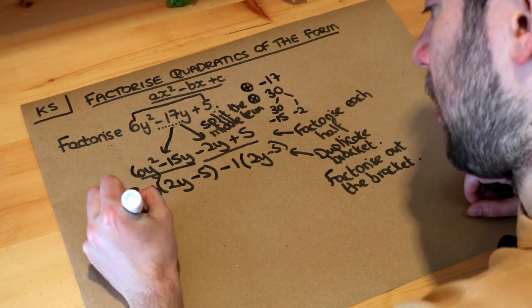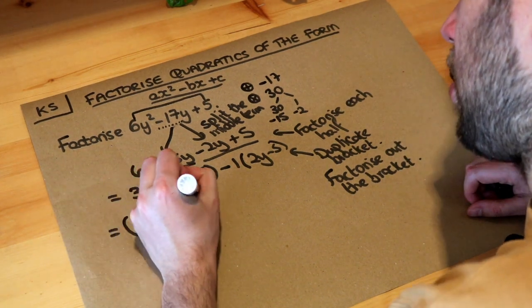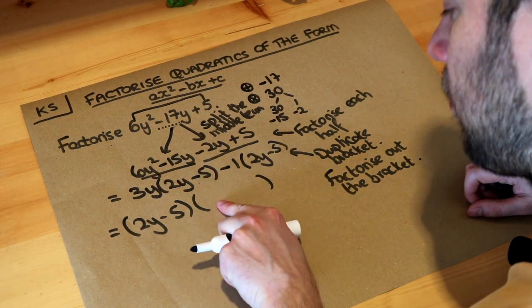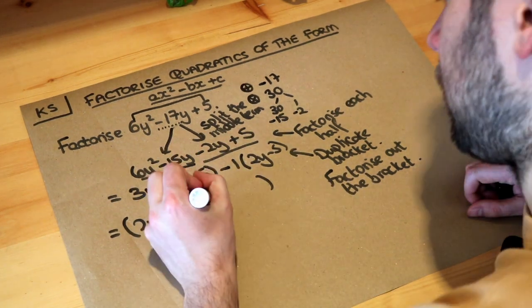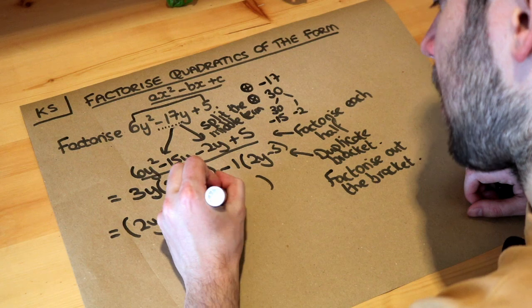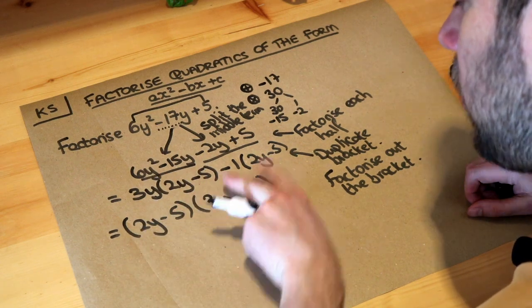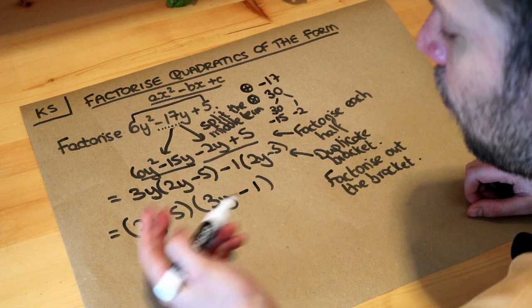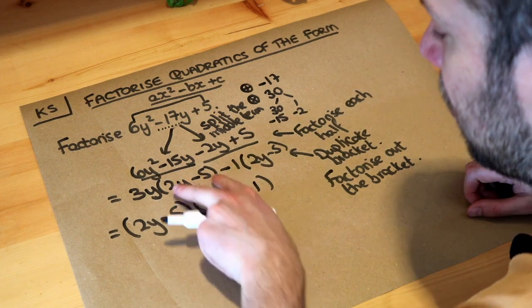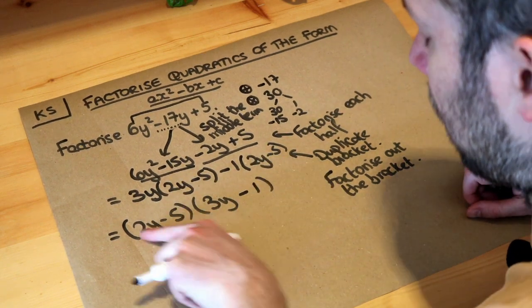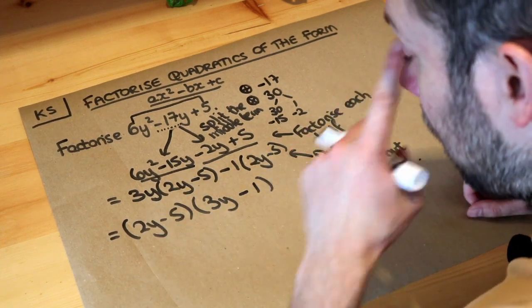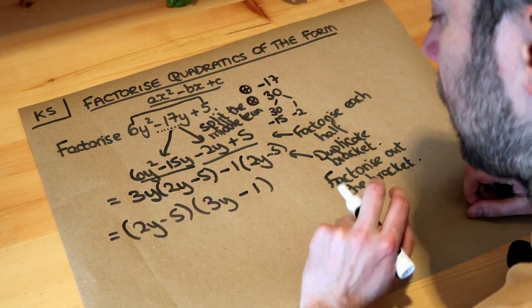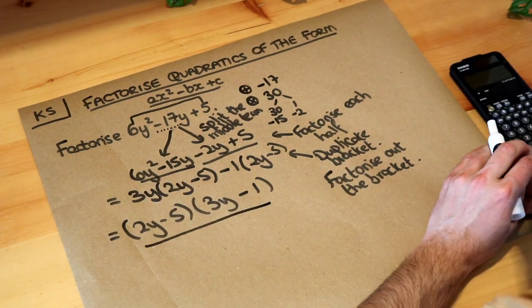We put another bracket: 2y minus 5 times what gives the first term? That's just 3y. And 2y minus 5 times what gives the second term? That's minus 1. The simple way to think about it is that this bracket is one of the brackets and the other bracket is whatever's outside, giving 3y minus 1. So the final answer is (2y minus 5)(3y minus 1).